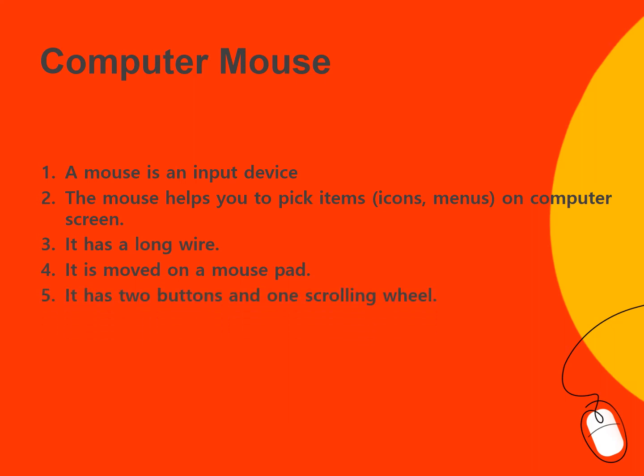It has two buttons and one scrolling wheel. When we click the buttons, we can perform any task. For example, using the buttons we can pick items, files, and icons. And using the scrolling wheel, we can move up and down on the computer screen.